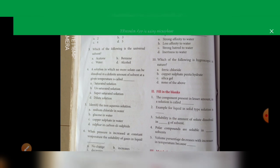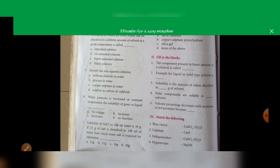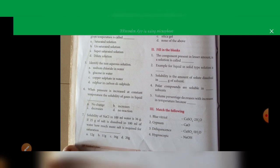Identify the non-aqueous solution: sulfur in carbon disulfide. When pressure is increased at constant temperature, the solubility of a gas in a liquid increases. Solubility of NaCl in 100 ml of water is 36 grams. If 25 grams of salt is dissolved in 100 ml of water, how much more salt is required for saturation? The answer is 11 grams.